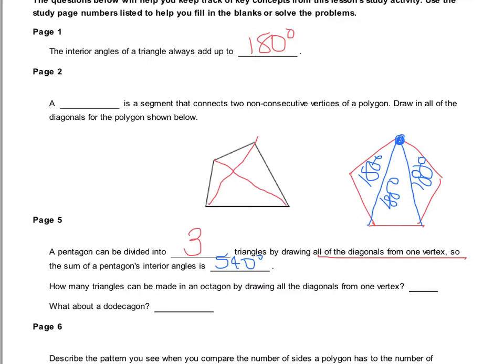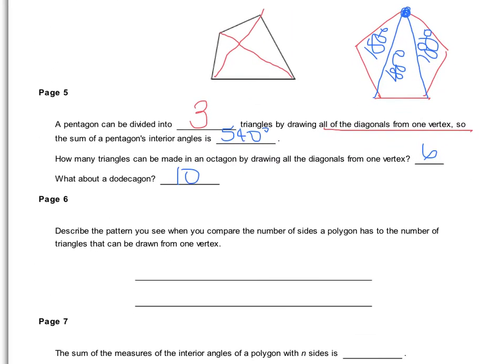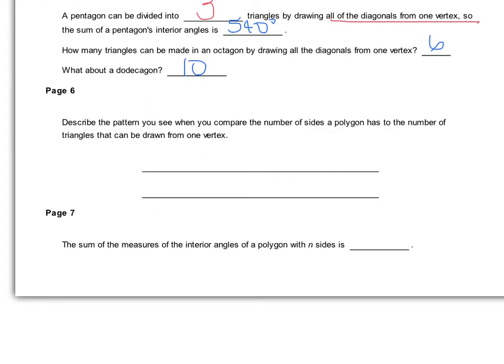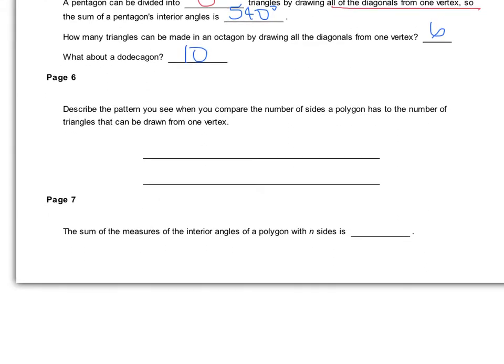An octagon can be split into six triangles, and a dodecagon can be split into ten. There is a formula you can use: the sum of the measures of the interior angles of a polygon with n sides is the formula 180 times (n minus 2).